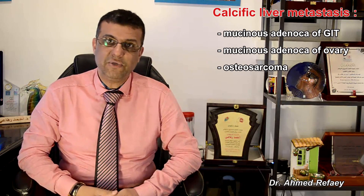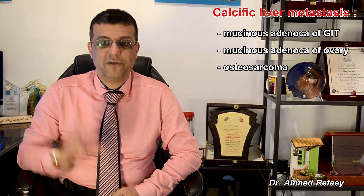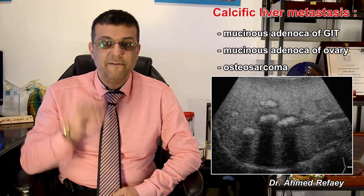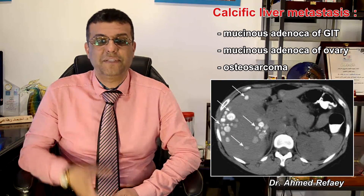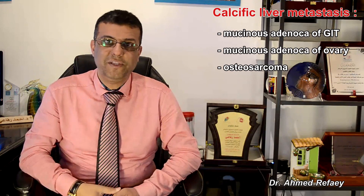Also, some tumors give calcific metastases to the liver, such as mucinous adenocarcinoma of the GIT, mucinous adenocarcinoma of the ovaries, and osteosarcoma. These calcific metastases appear on ultrasound as dense echogenic lesions with posterior acoustic shadowing, on CT as calcific bright lesions best seen on non-contrast study, and on MRI as hypointense lesions on both T1 and T2-weighted images.